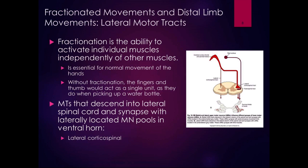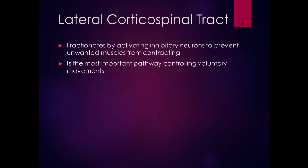Motor tracts that descend into the lateral spinal cord and synapse with laterally located motor neuron pools in the ventral horn are the lateral corticospinal tracts — shown as the large red tract in the diagram. There is also the rubrospinal tract, which makes a small contribution to distal movement, but we won't spend much time on it. The lateral corticospinal tract fractionates movement by activating inhibitory neurons to prevent unwanted muscles from contracting, and it is the most important pathway controlling voluntary movements.